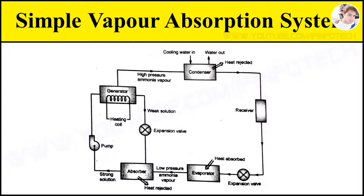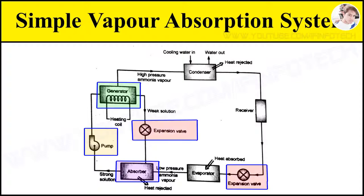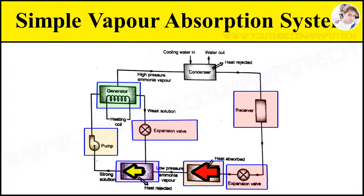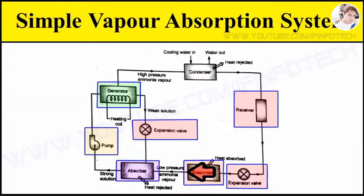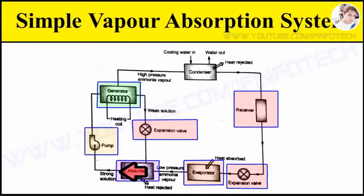This figure shows a simple vapor absorption system which consists of an absorber, pump, generator, expansion valve, evaporator, and receiver. The working fluid is an aqua-ammonia solution, where ammonia acts as the refrigerant and water acts as the absorber. In this system, the low-pressure ammonia vapor leaving the evaporator enters the absorber.